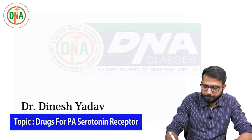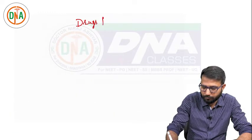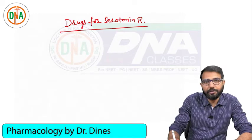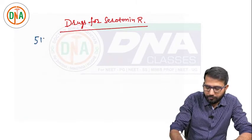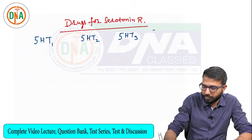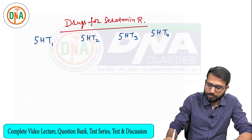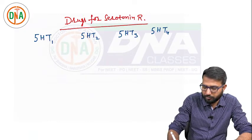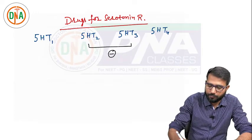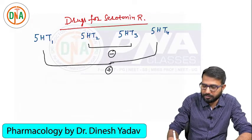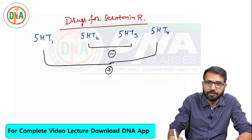Now, drugs for serotonin receptors. In serotonin receptors we have seven types, but fortunately we have drugs only for four receptors: 5-HT1, 5-HT2, 5-HT3, and 5-HT4. One very important rule is that drugs for 5-HT2 and 5-HT3 are mostly antagonists, while drugs for 5-HT1 and 5-HT4 are mostly agonists — with one exception we will discuss.